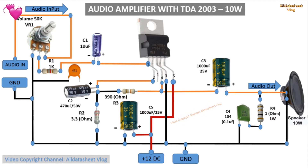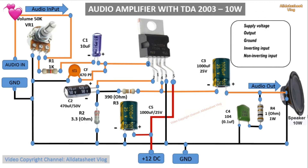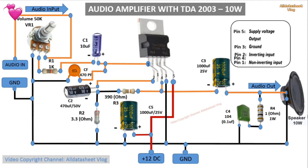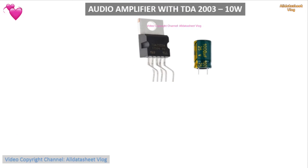If we want a larger gain, we increase the value of R3. C3 is 1000 microfarads 25 volts — at 10 volts it works fine. R4 is 1 ohm. C4 is 0.1 microfarads, expressed as 104. C5 is 1000 microfarads 25 volts or higher. If the source is well rectified and the cable distance is not much, it can be 470 microfarads.